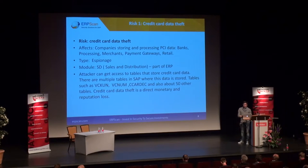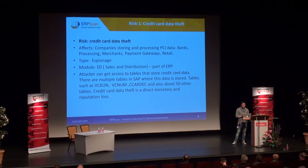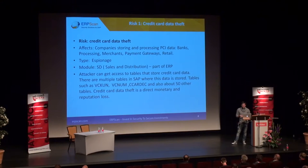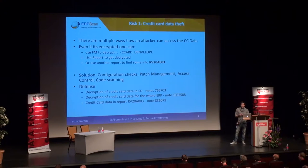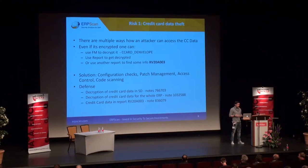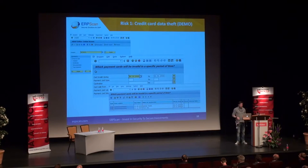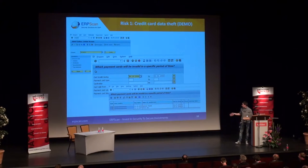Let's look at the possible risks after compromising an SAP system. The first risk is stealing credit card data. SAP stores credit card information in around 15 different tables such as VCKUN, VCNUM, and others. In many of these tables, credit card data is stored encrypted, but SAP also has function modules which allow decrypting all this data — so encryption is not a problem for an attacker. On this slide you can see an example screen showing credit card type, card number, expiration date, and cardholder name — pretty interesting for attackers.